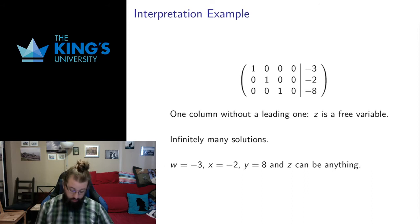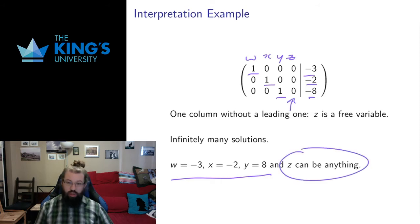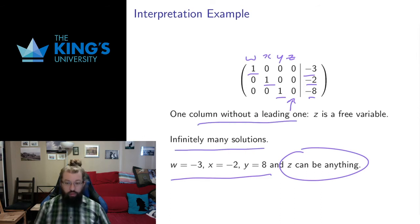Here's a similar system. I've got columns for w, x, y, and z in R4 — a system in four variables. This tells me that w equals negative 3, x equals negative 2, and y equals 8. But there's no restriction on z. Anytime z would show up it's multiplied by 0. So z is a free variable, and the z column has no leading one — that's how we know z is a free variable. So w, x, and y are fixed but z can be anything. This means there are infinitely many solutions, and since there's one column without a leading one, there's one free parameter. The dimension of this solution space is 1.